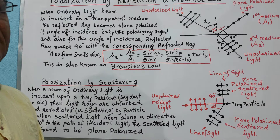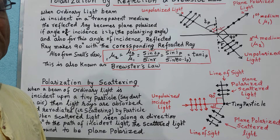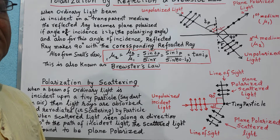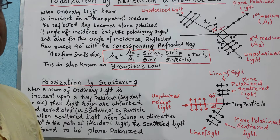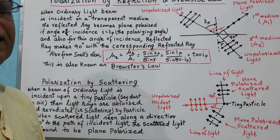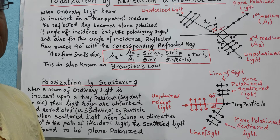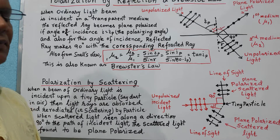When a light ray is incident on some transparent medium, the reflected light is found to be partially polarized in general. It becomes completely plane polarized when the angle of incidence is equal to a particular angle known as the polarizing angle for that transparent medium.